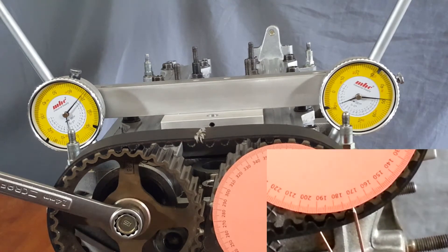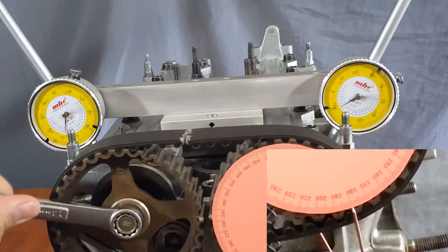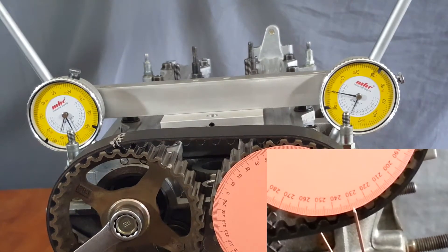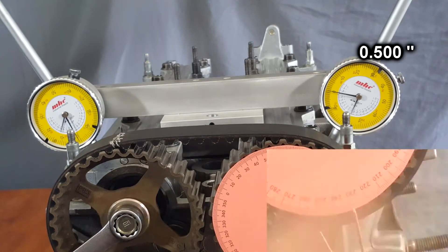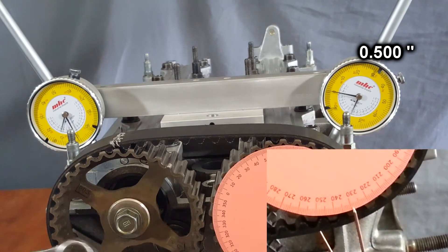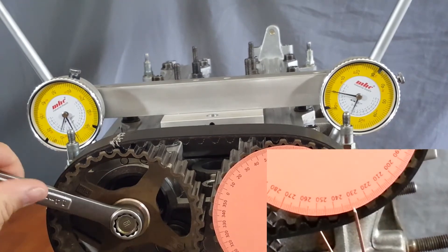Now we'll keep going and find the max lift, which is about 500 thousandths. So 100, 200, 300, 400, 500. Keep an eye on the right gauge—that's the one we're looking at on the intake side. So we verified the lift.